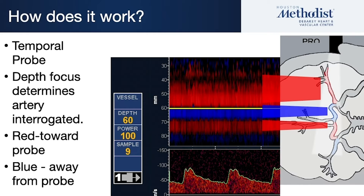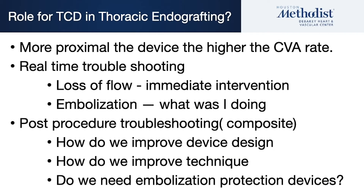TCD allows us to directly interrogate the ipsilateral MCA, ACA, and possibly the contralateral ACA. So what is the role in thoracic endografting? The more proximal the device we place into the ascending aorta, the higher the CVA rate. And of course, one of the most proximal devices is TAVR.